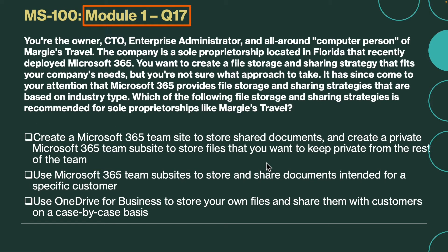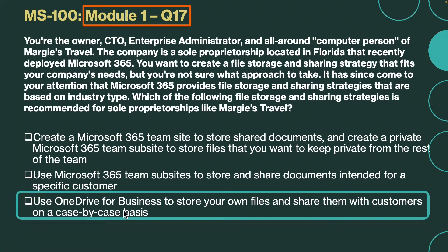Question number 17. You are the owner, CTO, enterprise administrator, and all-around computer person of Margie's Travel. The company is a sole proprietorship located in Florida that recently deployed Microsoft 365. You want to create a file storage and sharing strategy that fits your company's needs. Microsoft 365 provides file storage and sharing strategies based on industry type. Which strategy is recommended for a sole proprietorship like Margie's Travel? The correct answer is use OneDrive for Business to store your own files and share them with customers on a case-by-case basis.